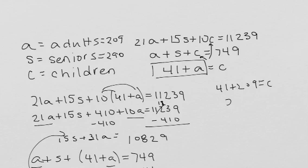So I'm going to check it out to make sure that I did this correctly. So I'm going to add the 290, the 250, and the 209. And that does give me my 749 guests. And I'm going to do 21 times my 209 plus 15 times my 290 plus 250 times 10. And I get my 11,239. So it checks out.